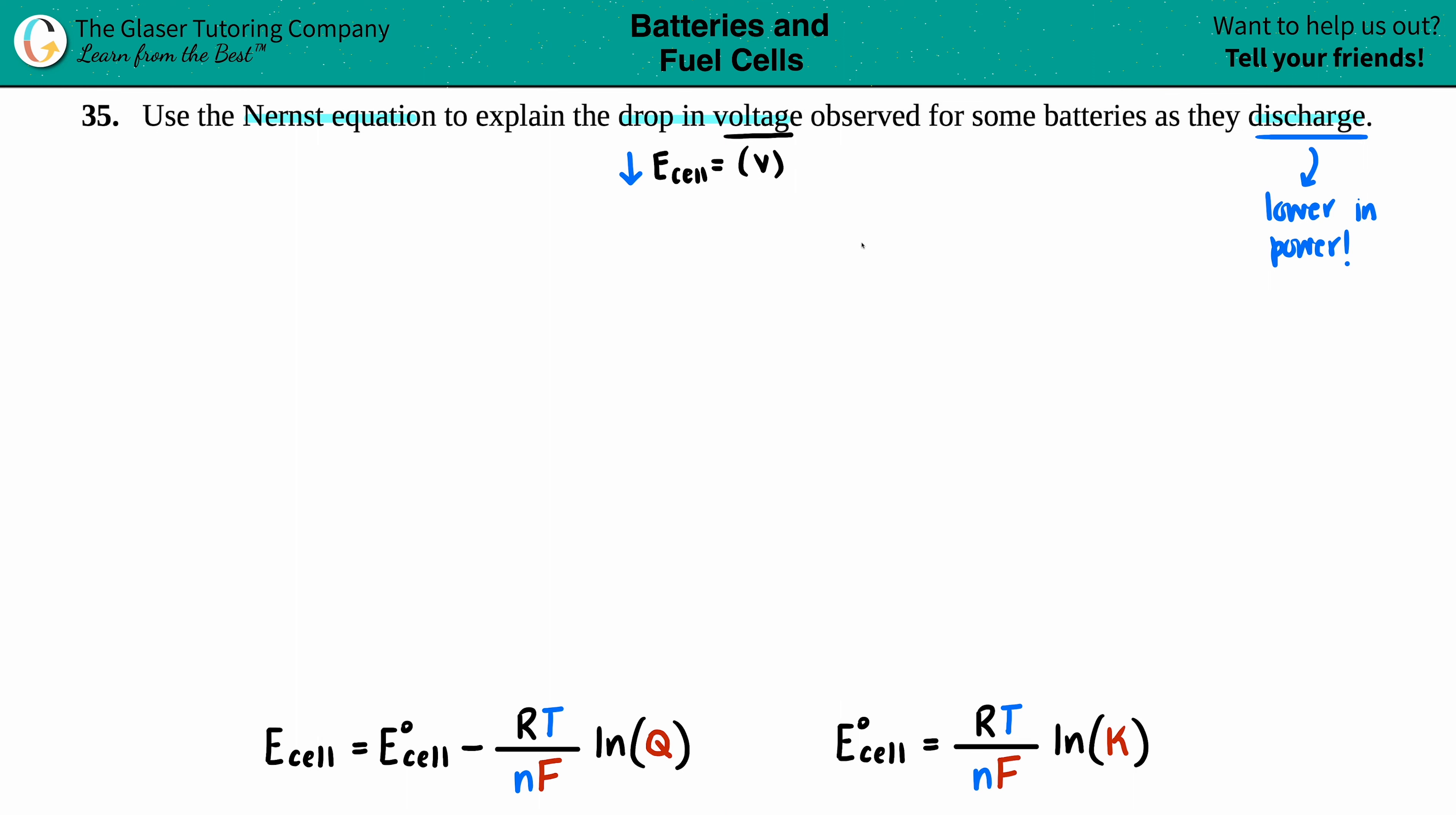But now we need to find out why the voltage lowers when they're losing power. Well, it seems like we have to combine these two equations. The idea is that as batteries discharge, they're basically going towards equilibrium.